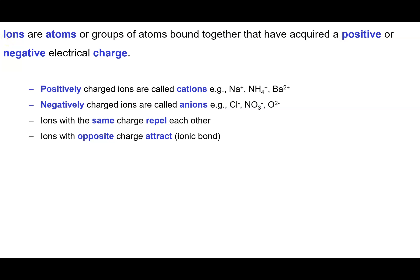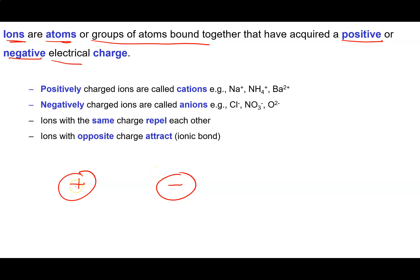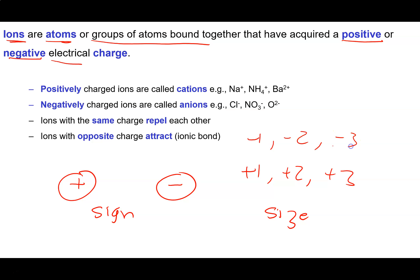Not all compounds contain or are composed of molecules. Some compounds are composed of what are called ions. Ions are atoms or groups of atoms that are connected via chemical bonds and have acquired either a positive or a negative electrical charge. Electrical charge is a property that can be either positive or negative — it has a sign and also a size. The charge can be plus one, plus two, plus three, or minus one, minus two, minus three, going up in integer amounts. We indicate both the sign and the size of the electrical charge.